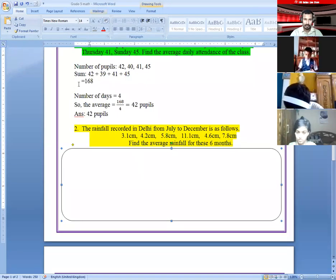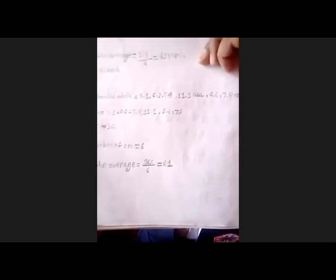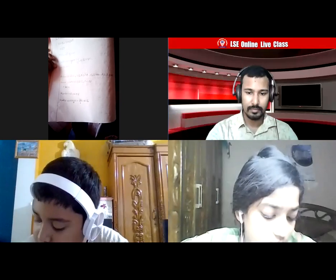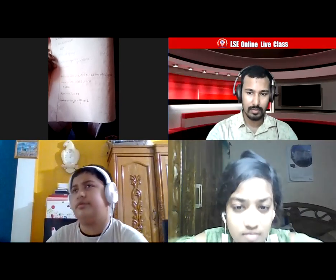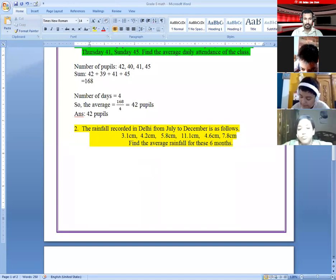Number two done, right? Okay then show. That means you have done in this way, right? The rainfall recorded in Delhi from July to December is as follows. I am doing it. Sum of the rain recorded.